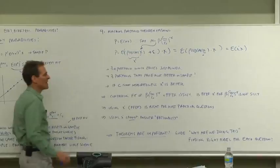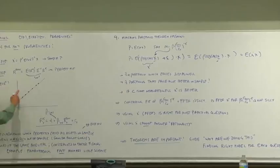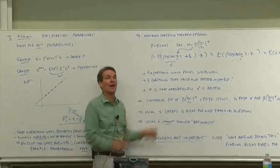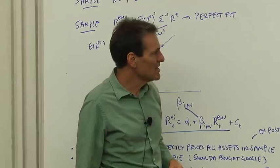Now, what does that mean? There's a portfolio that prices just as well as the true discount factor. And we also know from our last fishing theorem that there's a lot of portfolios that will price a whole lot better in a sample because they fish their way around to something closer to sample mean variance efficient.